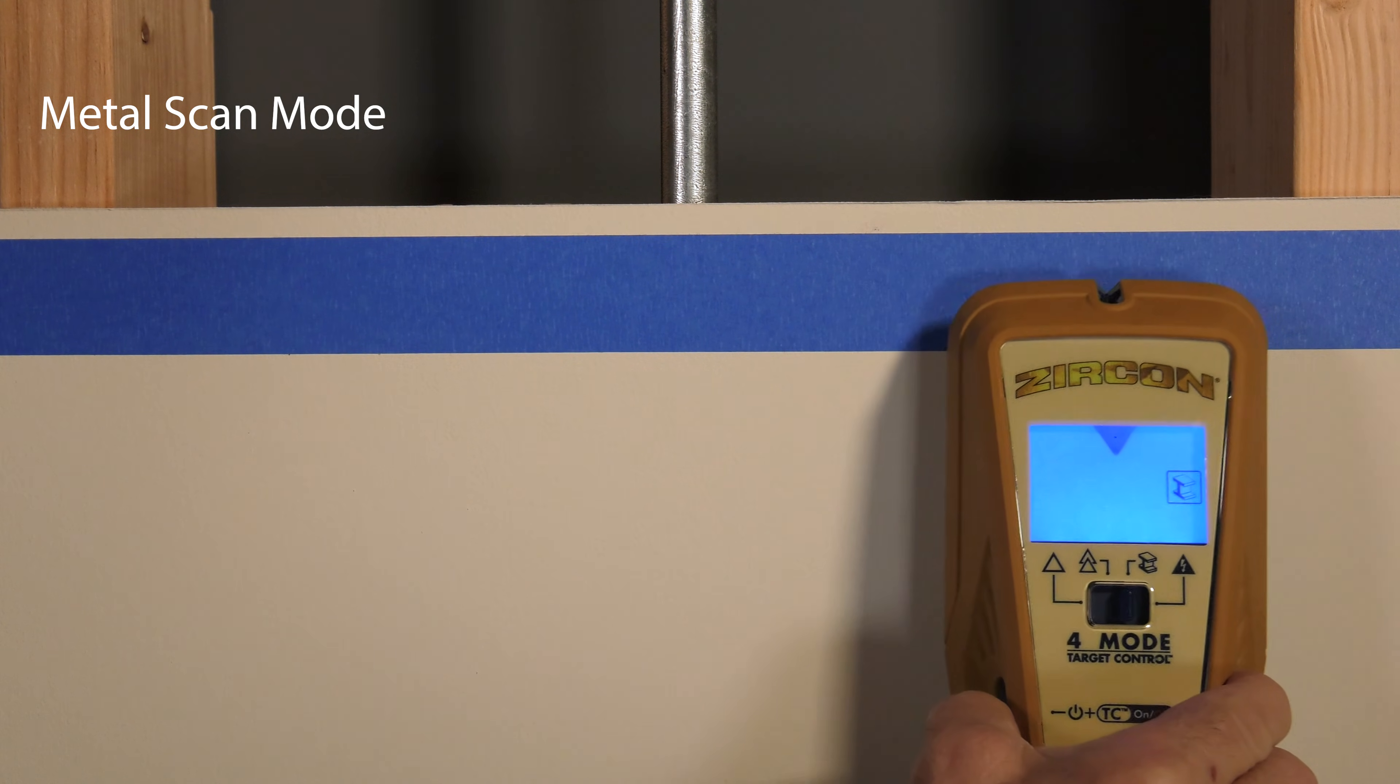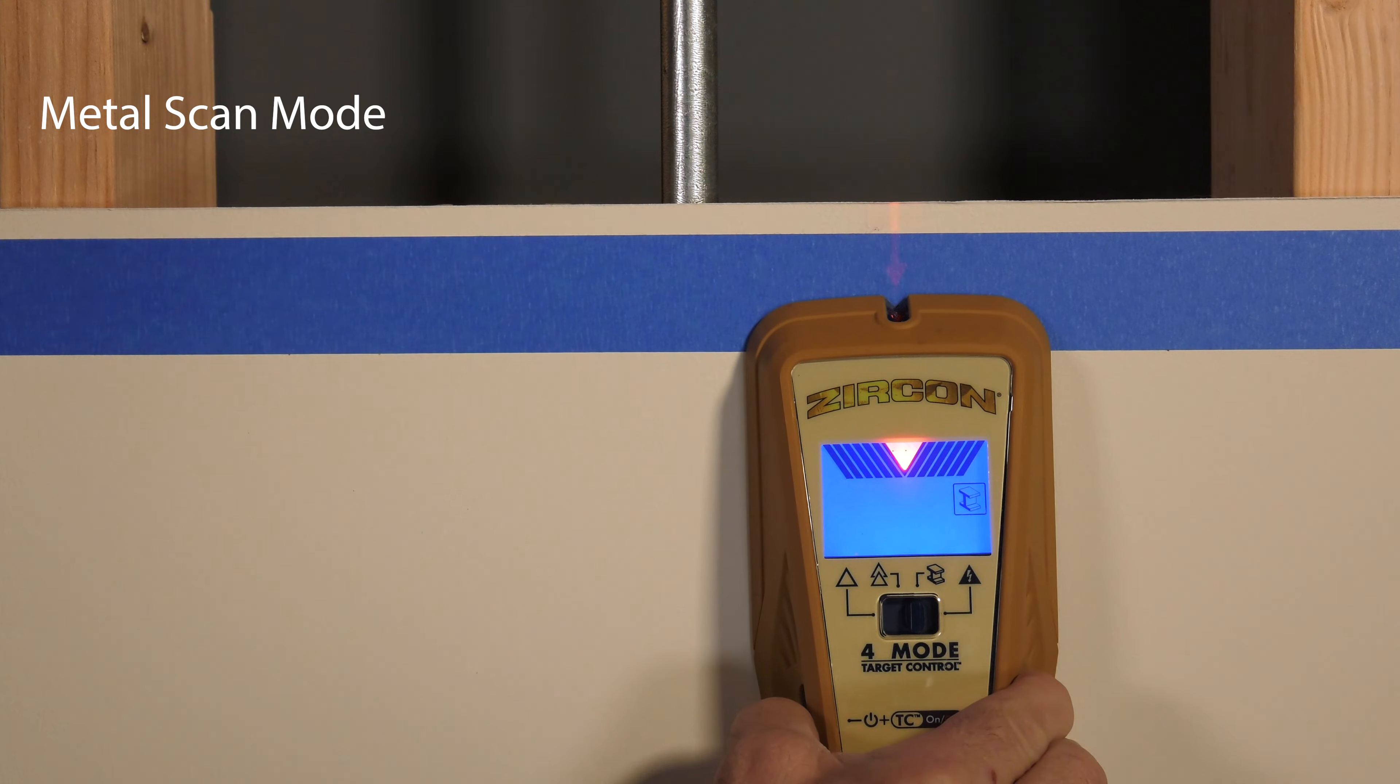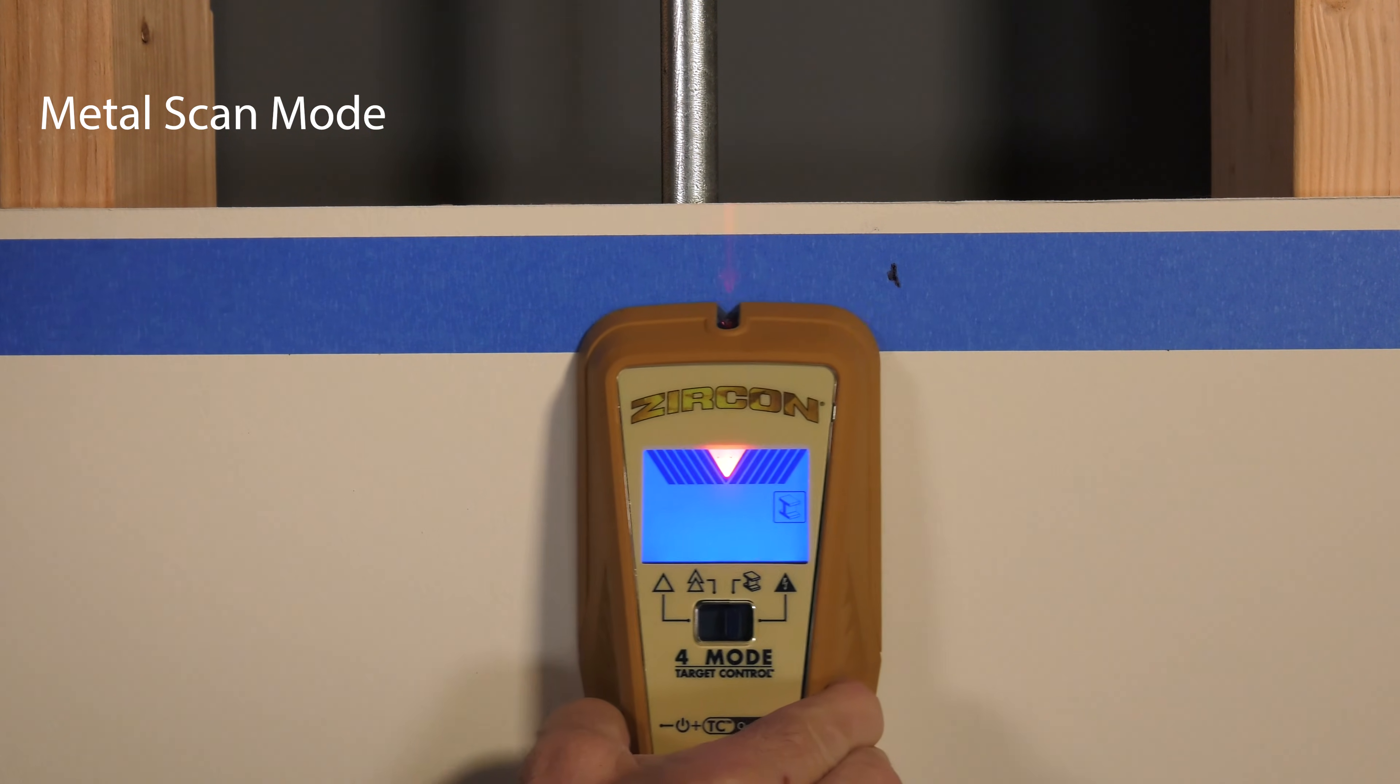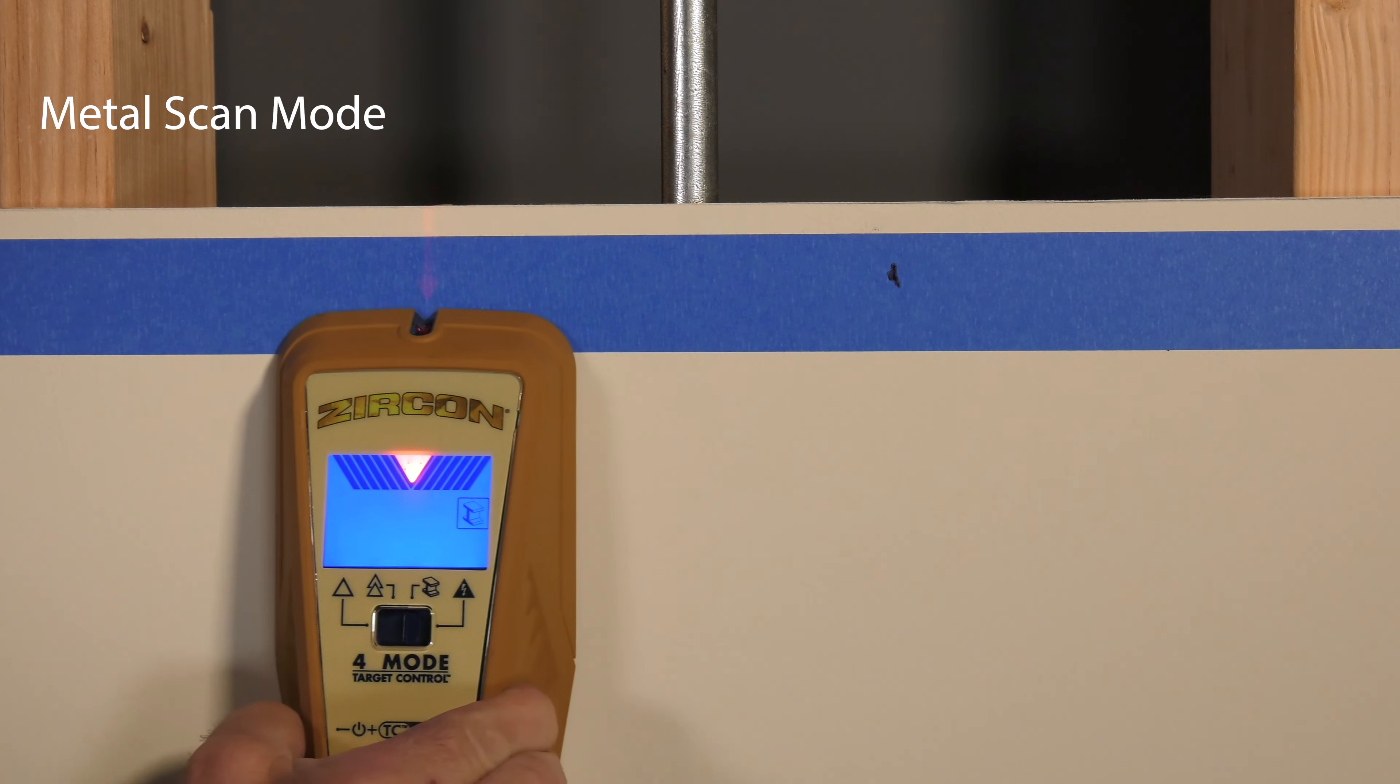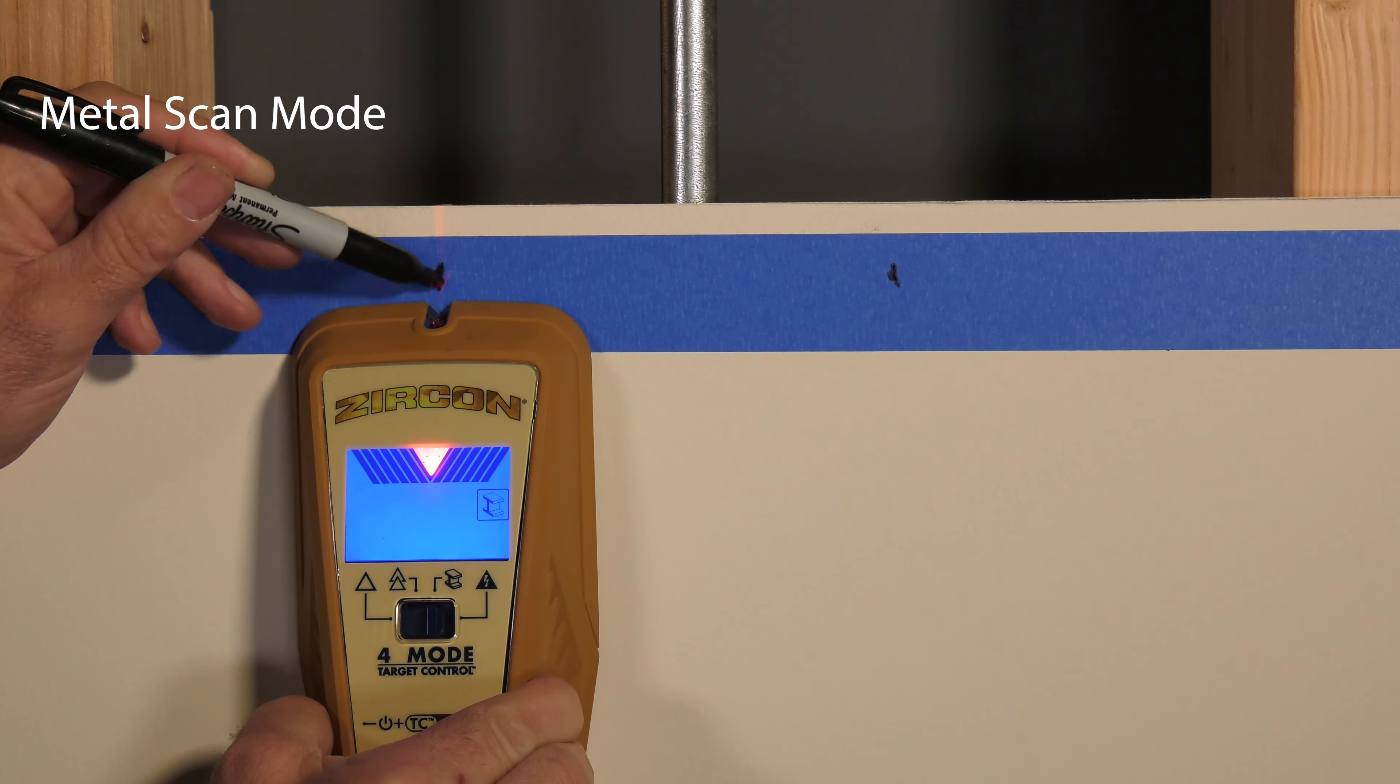Keeping the button pressed, place the tool on the wall and begin scanning. The target indication bars will ramp as you approach metal and the spotlight pointer shines when you're near the target. To narrow the results, refer to the interactive calibration method in the instructions.